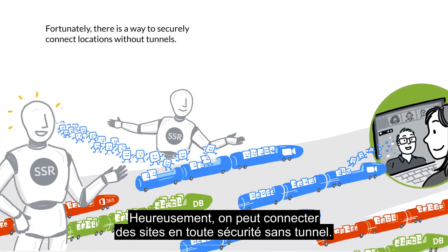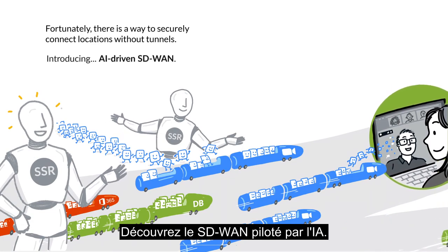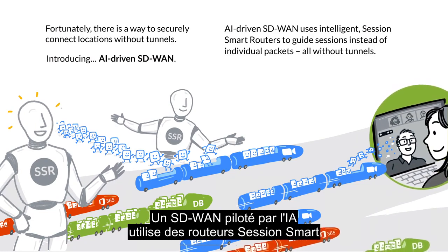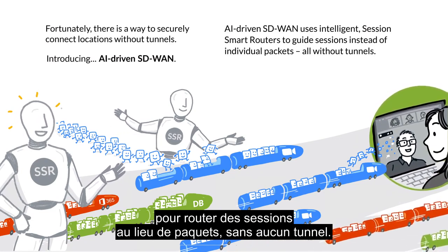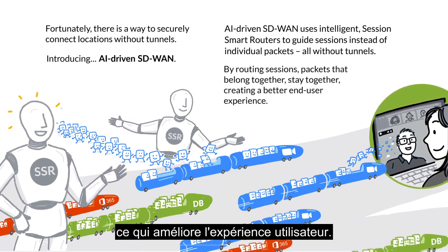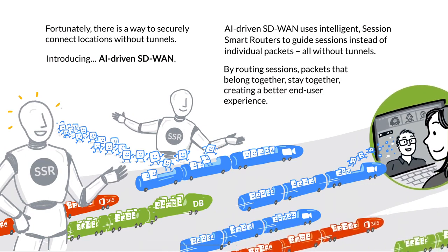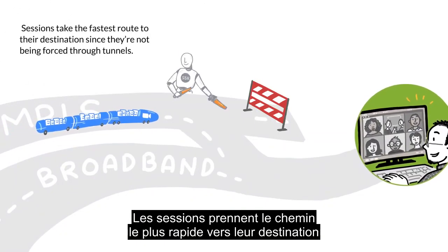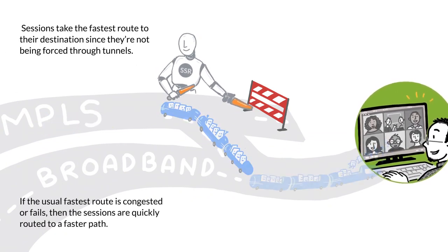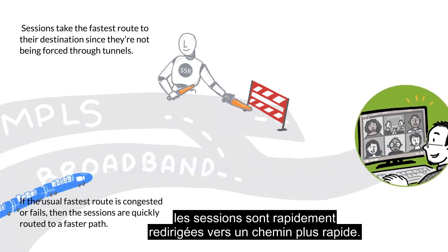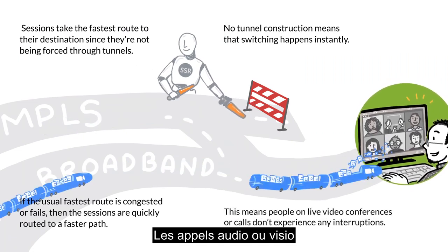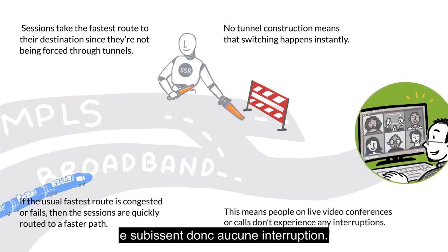Fortunately, there is a way to securely connect locations without tunnels. Introducing AI-Driven SD-WAN. AI-Driven SD-WAN uses intelligent session smart routers to guide sessions instead of individual packets, all without tunnels. By routing sessions, packets that belong together stay together, creating a better end user experience. Sessions take the fastest route to their destination since they are not being forced through tunnels. If the usual fastest route is congested or fails, sessions are quickly routed to a faster path. No tunnel construction means that switching happens instantly — people on live video conferences or calls won't experience any interruptions.